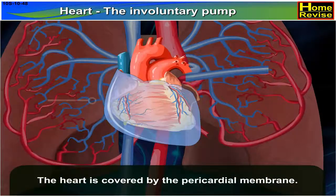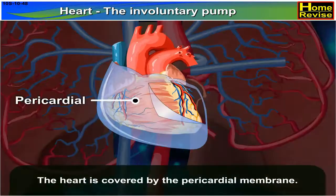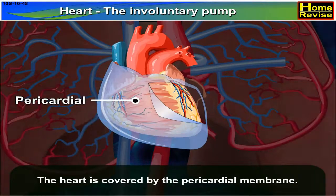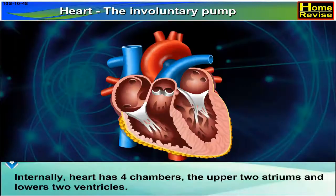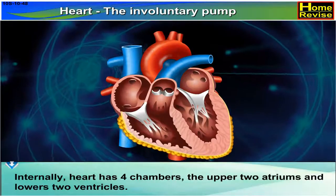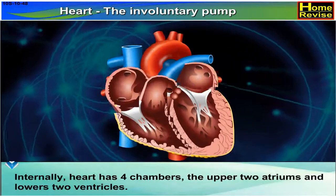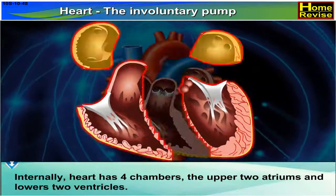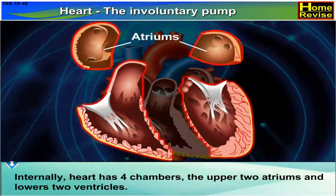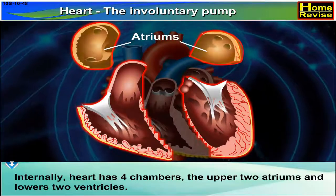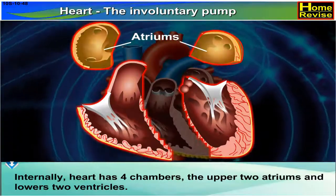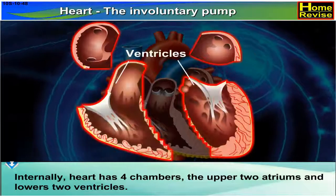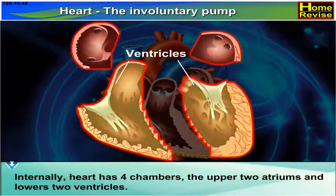The heart is covered by the pericardial membrane. Internally, the heart has four chambers: the upper two atriums and lower two ventricles.